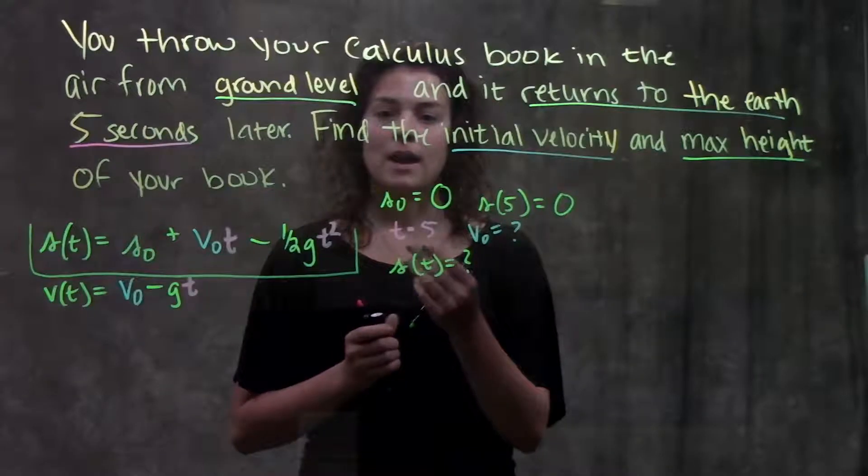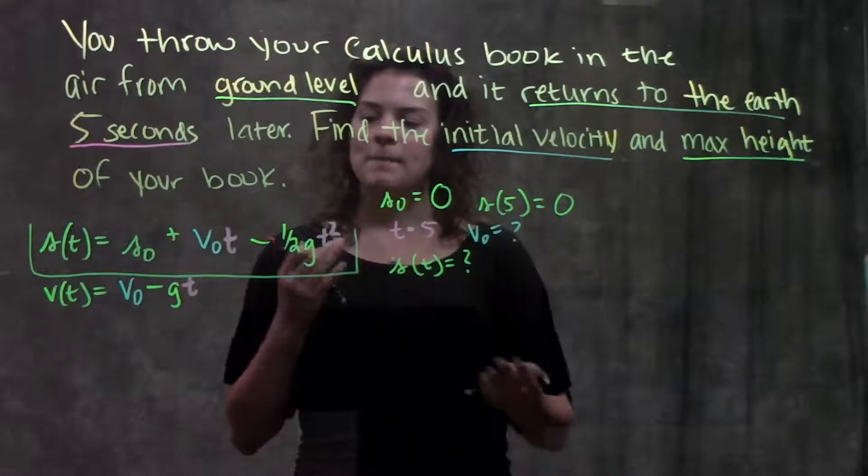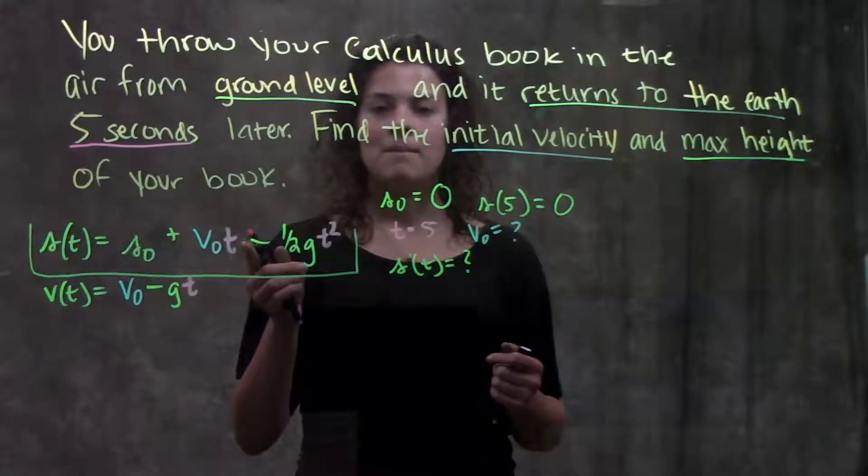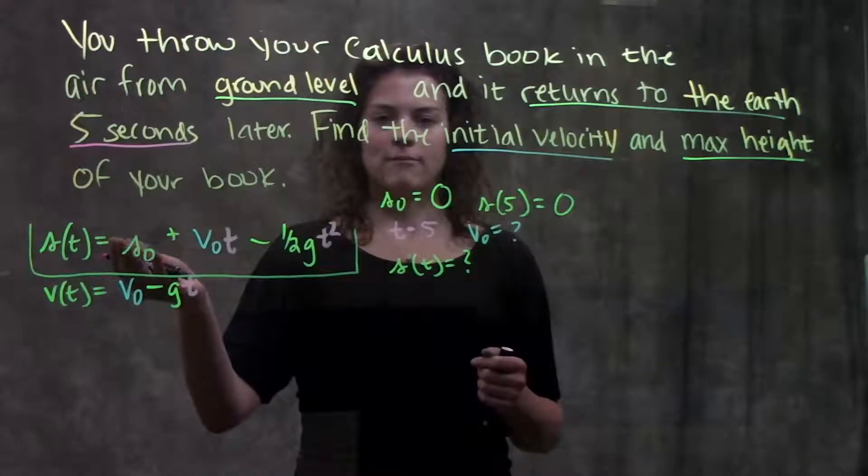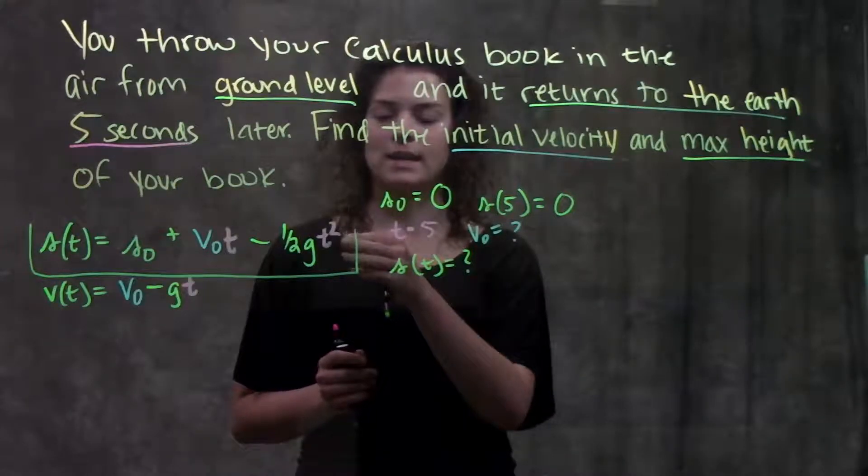If I tried looking for my maximum height first, I would look at my function and say I have too many unknowns here. I don't know my v₀ and I also don't know the time at which my maximum height is. So I wouldn't be able to solve for my maximum height first. So let's move on to our v₀ and see if we have enough information to solve for that here.